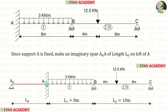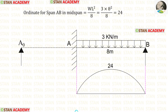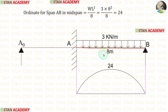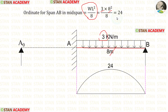Now let us take the spans A0A and AB and form the first equation. Let us find the ordinates. To find the ordinates, we have to consider every span as a separate simply supported beam and make the bending moment diagrams. For the imaginary span A0A, we cannot make the diagram because it is an imaginary span. In span AB, there is UDL 3 kN/m acting for the full span. The formula to find the maximum bending moment is WL²/8. Here W is 3 and L is 8. After calculations, we are getting 24.